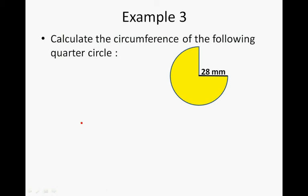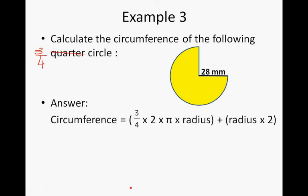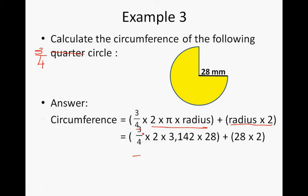Calculate the circumference of the following three-quarter circle. The three-quarter circle has a radius of 28 millimetres. The formula will be three-quarters times two times pi times radius, plus radius times two. So the formula part is three-quarters times 3.142 times 28 — 28 is this unique radius — plus radius times two. That will be 131.964 plus 56.